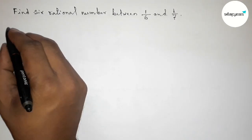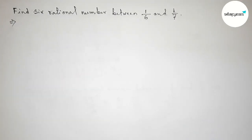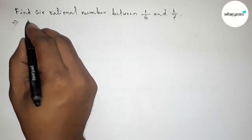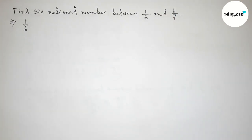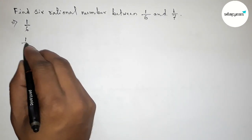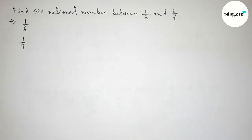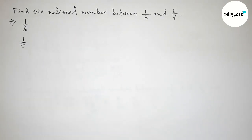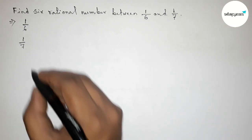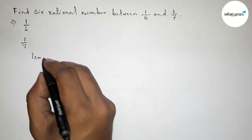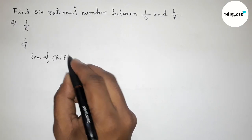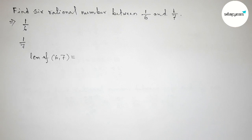First of all, let us solve this problem. Here the given first rational number is 1 by 6 and the second one is 1 by 7. Both the denominators are not the same, so we have to make the same denominator first. So first of all, finding the LCM of 6 and 7.